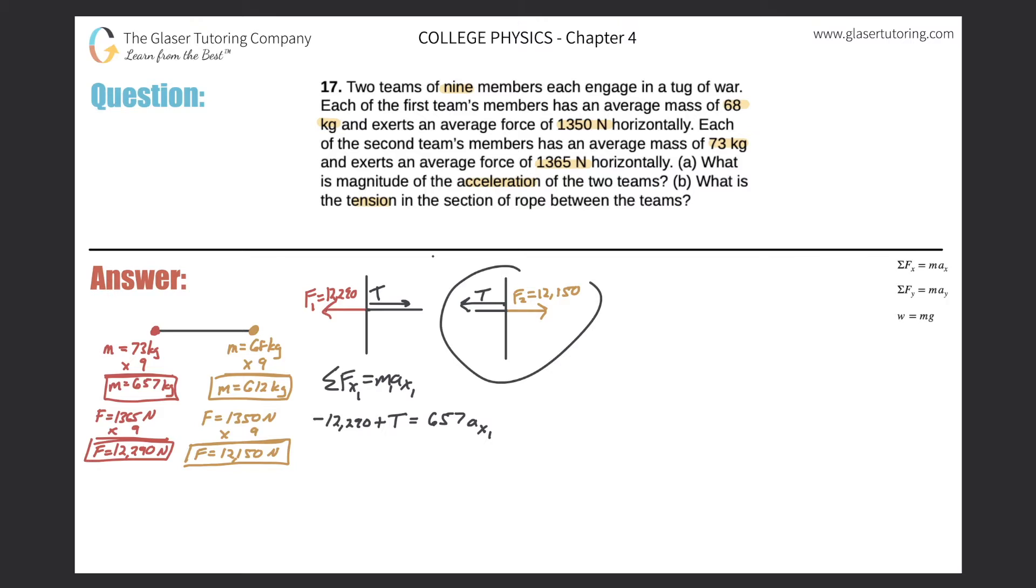Now, why don't we develop the second equation for that team, for team two? So for team two, we're going to have some of the forces in the x direction of team two should equal the mass of team two multiplied by the acceleration in the x direction of team two. Now, so the sum of the forces here, the force now is positive the applied force. So that's going to be 12,150. I could put plus a negative tension, because it's pointing to the left. I'm just going to write minus T is equal to then the total mass of team two, which is 612. So we've got 612 times then a_x2.